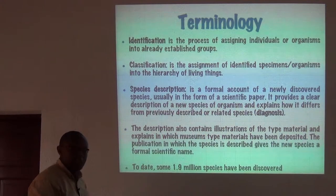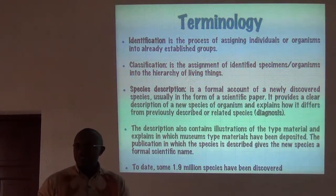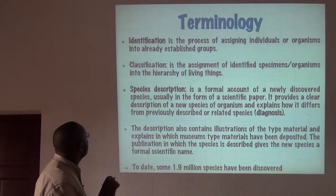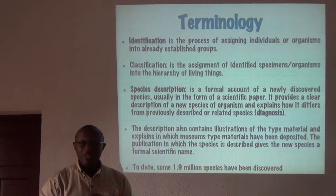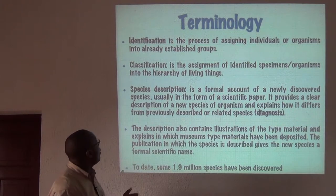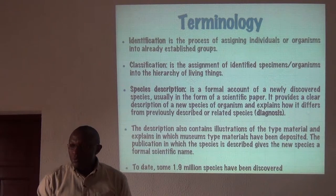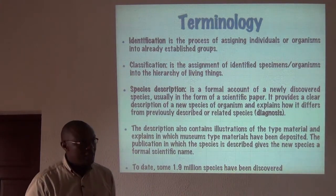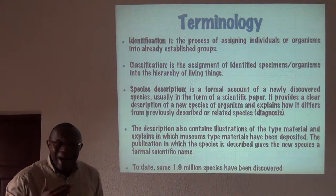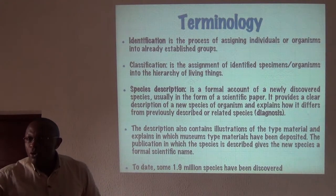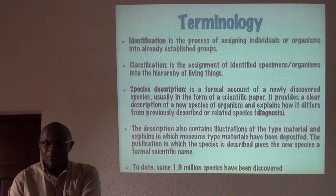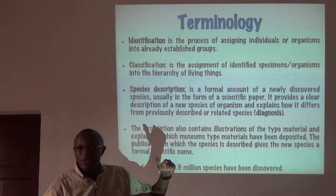Identification is the process of assigning individual organisms into already established groups. Classification is the assignment of identified specimens or organisms into the hierarchy of living things. So after you've identified a new frog, you need to place it into all the higher rankings — you give it a genus and specific name, but you also need to assign it to a sub-family, family, and so on. That is classification.